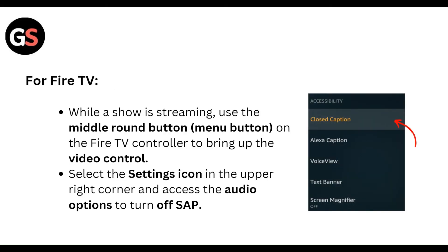For Fire TV, while a show is streaming, use the middle round button and menu button on the Fire TV controller to bring up the video controller. Then select the settings icon in the upper right corner and access the audio option to turn off SAP.